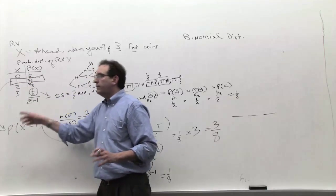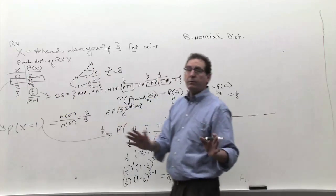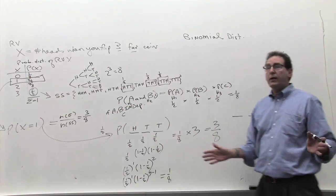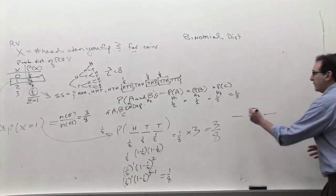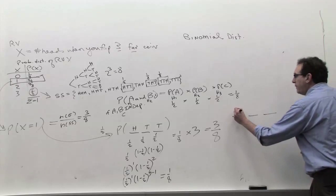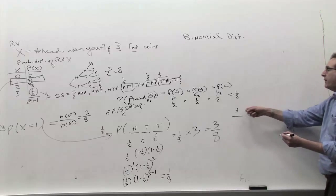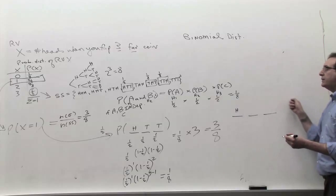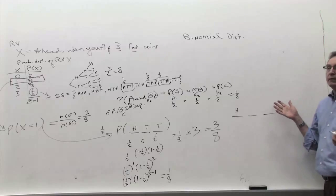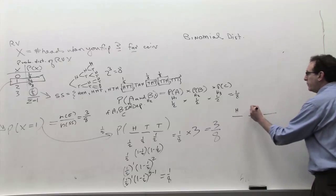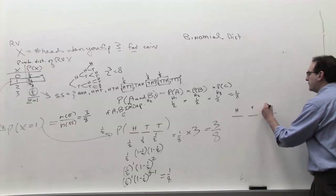Find exactly one head — that's the problem we're spending the whole thing on. So the head can be here. If the head is over here, what do these other things have to be? Well, these have to be tails.